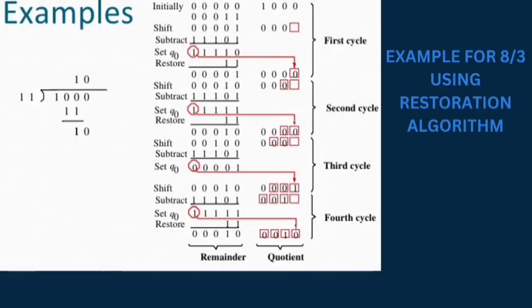As we have seen how to calculate division using the restoring algorithm, let's move on to an example. We have taken the example of 8 divided by 3. We have initialized the values of A and Q respectively. As per the method, we apply the shift operation and then convert A to A minus M. After that, the most significant bit of A is 1, so we set Q naught to 0 and restore A. We continue this process until the count becomes 0. After the 4th cycle, we get our remainder, which is 2 in A, and the quotient in Q, which is 2.